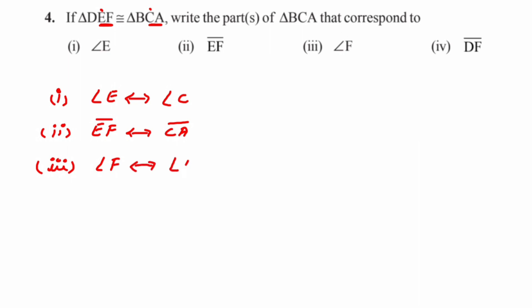And the last one: line segment DF will be congruent to line segment BA. That's it. Those were really simple questions in this exercise. I hope you understood. In case you have any questions or doubts, please drop a comment — I'll try to answer them. Thank you so much for watching.